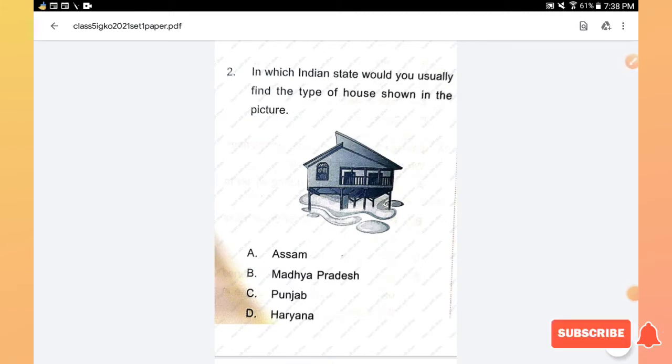Options are 14, 12, 10, 6. Right answer is we have 12 pairs of ribs.